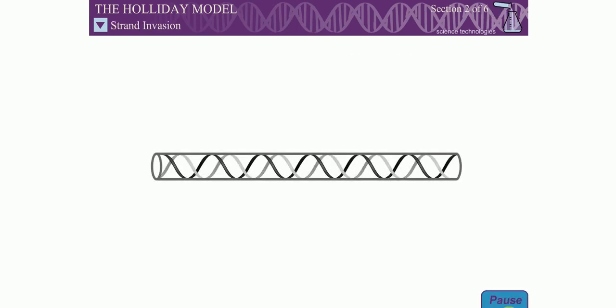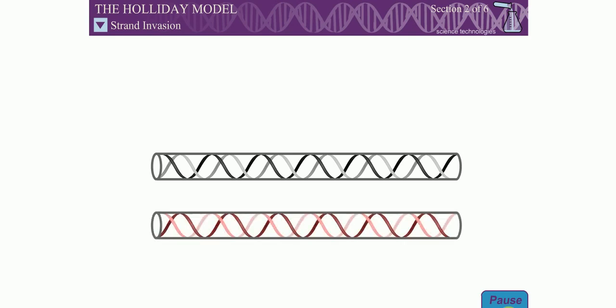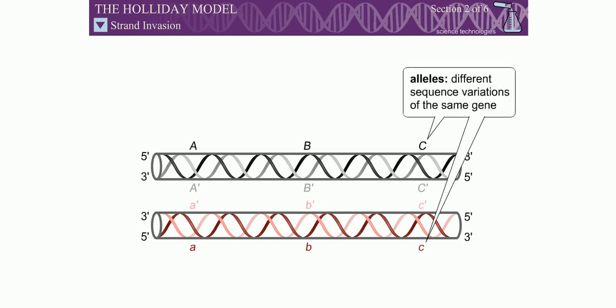To visualize homologous recombination using the Holliday model, it is useful to first picture two homologous double-stranded DNA molecules aligned with one another. These DNA duplexes may carry different alleles of the same gene.